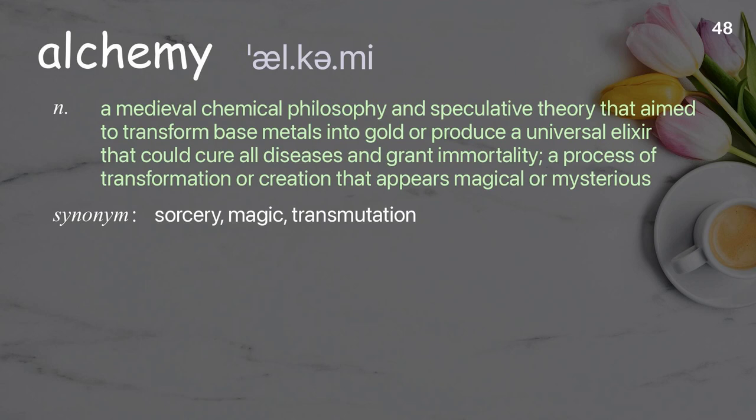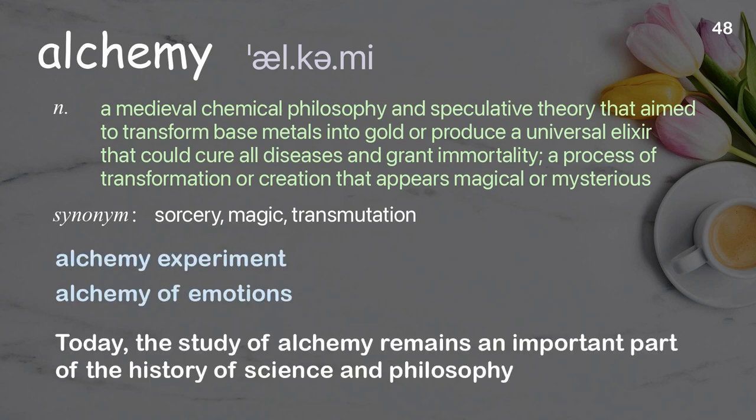Alchemy: a medieval chemical philosophy and speculative theory that aimed to transform base metals into gold or produce a universal elixir; a process of transformation or creation that appears magical or mysterious. Examples: alchemy experiment, alchemy of emotions. Today, the study of alchemy remains an important part of the history of science and philosophy.